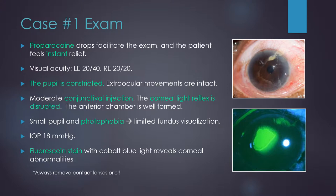With this history, you examine the patient. Proparacaine drops provide instant pain relief and help facilitate your exam. Visual acuity in the left eye is decreased and the pupil is constricted. There is moderate conjunctival injection and the corneal light reflex is disrupted. Your visualization of the fundus is limited. With suspicion, you decide to do a fluorescein exam, which uses an orange dye and blue light to detect foreign bodies or irregularities on the surface of the cornea. Any abnormalities on the surface will be stained by the dye and appear green under blue light. Your findings appear similar to the photo on the right.